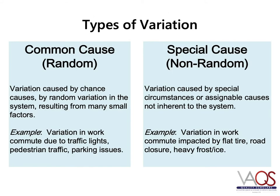Common cause variation is variation that happens by chance alone. This type of variation is sometimes called random variation and does not represent a statistically significant change. Unfortunately, people often get excited about single point changes in data without recognizing that the single point change represents random variation, which can result in tampering with a system that was actually stable. One example of common cause variation is your commute to work — although your commute may vary day to day, the variation is often predictable and depends on things like traffic lights and parking. Special cause variation is non-random variation that can be attributed to an assignable cause. For our work commute example, we've all experienced non-random variation from an assignable cause such as a flat tire, road closure, or bad weather.